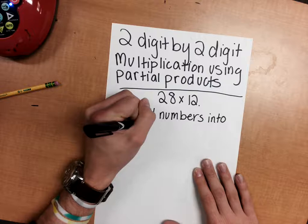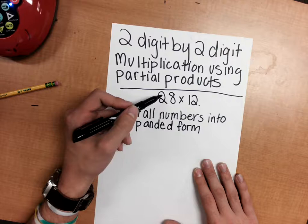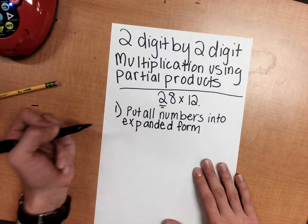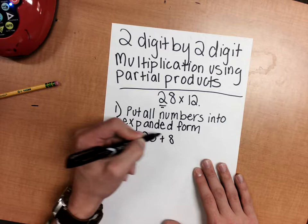When we're talking about expanded form, we're talking about how these numbers come together with place values. For example, 28 has a 2 in the tens place, so that's 20, and it has an 8 in the ones place, and that's 8. So 28 equals 20 plus 8.